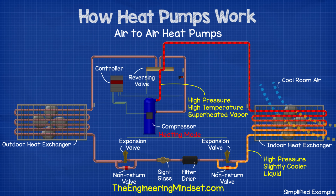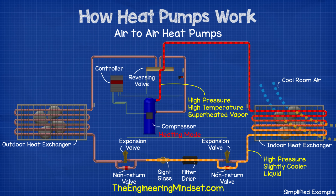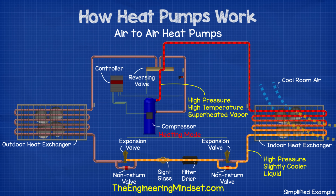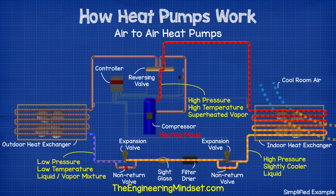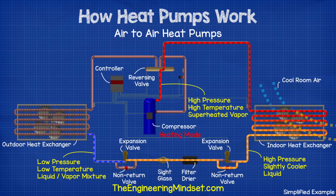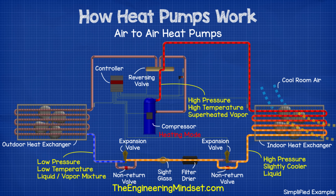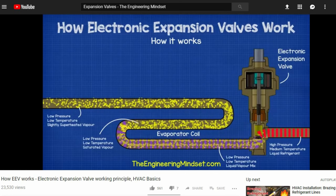The refrigerant then comes to the expansion valve and bypass. In this mode, the expansion valve is closed, so the liquid refrigerant passes through the non-return valve. It then passes through the filter dryer and sight glass, and then passes to the second expansion valve. It will then pass through this expansion valve because the non-return valve on this side is preventing flow in that direction. As the refrigerant passes through the expansion valve, it expands in volume and turns into a part liquid, part vapor mixture. This expansion in volume reduces the temperature and pressure. We've covered how thermal expansion valves and electronic expansion valves work in great detail in previous videos — links are in the video description below.